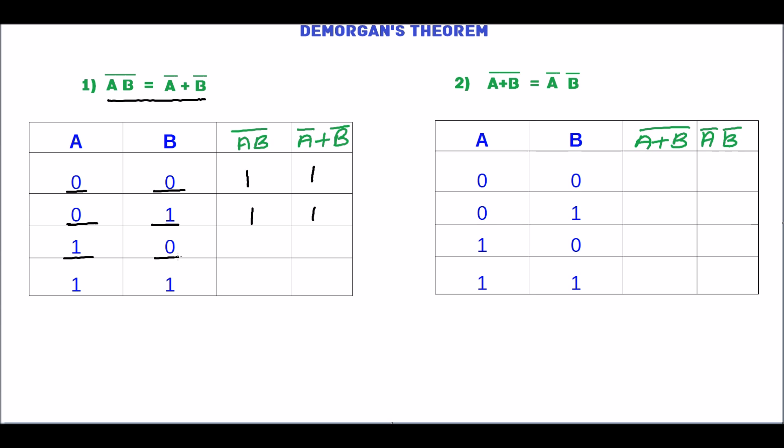For A=1, B=0: AB is 0, and 0 complement is 1. For A=1, B=0: A complement is 0 and B complement is 1, so 0 plus 1 equals 1.